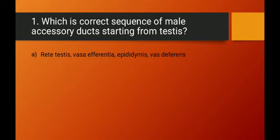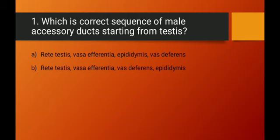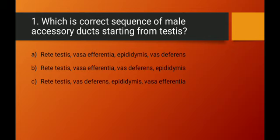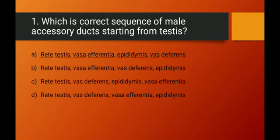The options are: Option A — rete testis, vasa efferentia, epididymis, vas deferens — which is the correct order. Option B has vasa efferentia followed by vas deferens then epididymis, which is wrong. Options C and D also have incorrect sequences. So option A is the correct answer to question number one.